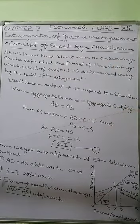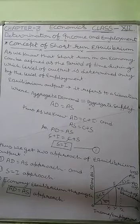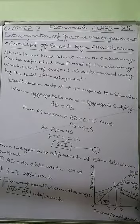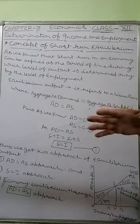In microeconomics, the short-term is known as a problem period, because in the short-term an investor becomes incapable of adjusting to market demand and supply. He is also unable to adopt new technology or make new investments. In macroeconomics, however, short-term refers to that particular point of time where equilibrium can be achieved between two variables.